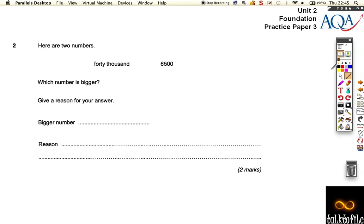Question number two on this practice paper asks us which number is bigger out of these two. I would turn them both into digits, so I turn 40,000 to digits, which is 40 and then three zeros. Which number is bigger? 40,000 is bigger.